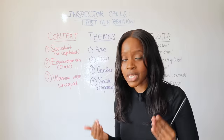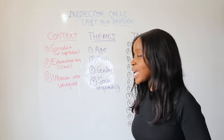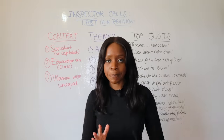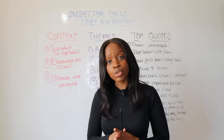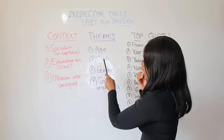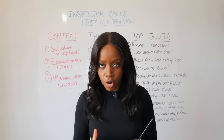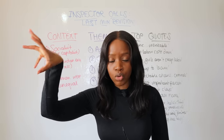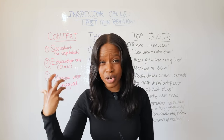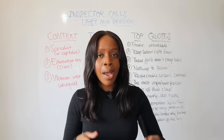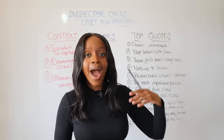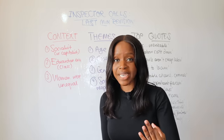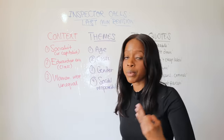Now let's go over the four main themes for An Inspector Calls, starting with age. Priestley was very pessimistic about the older generation — he believed it would be the younger generation that would create change. Mr. and Mrs. Birling are presented as the older generation; their reaction is what Priestley would expect — they want to keep society exactly the same. But it is Eric and Sheila, the younger generation, who want to inspire change, become better, and create more equality for people like Eva Smith and Daisy Renton.